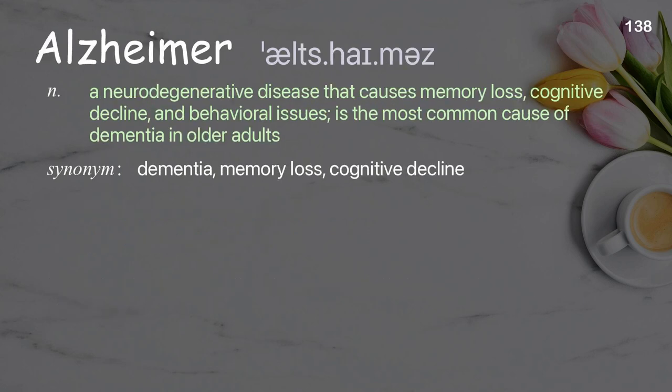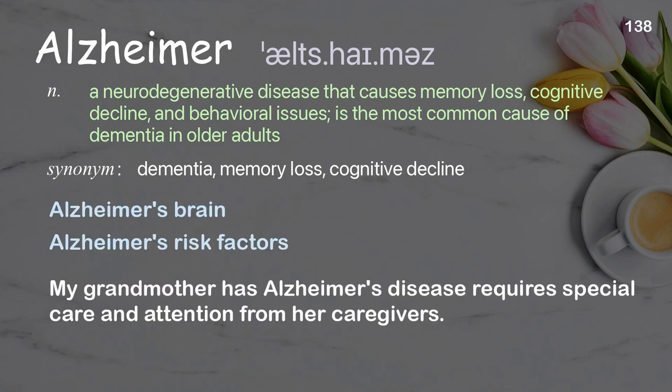Alzheimer's. A neurodegenerative disease that causes memory loss, cognitive decline, and behavioral issues. It is the most common cause of dementia in older adults. Examples: Alzheimer's brain, Alzheimer's risk factors. My grandmother has Alzheimer's disease and requires special care and attention from her caregivers.